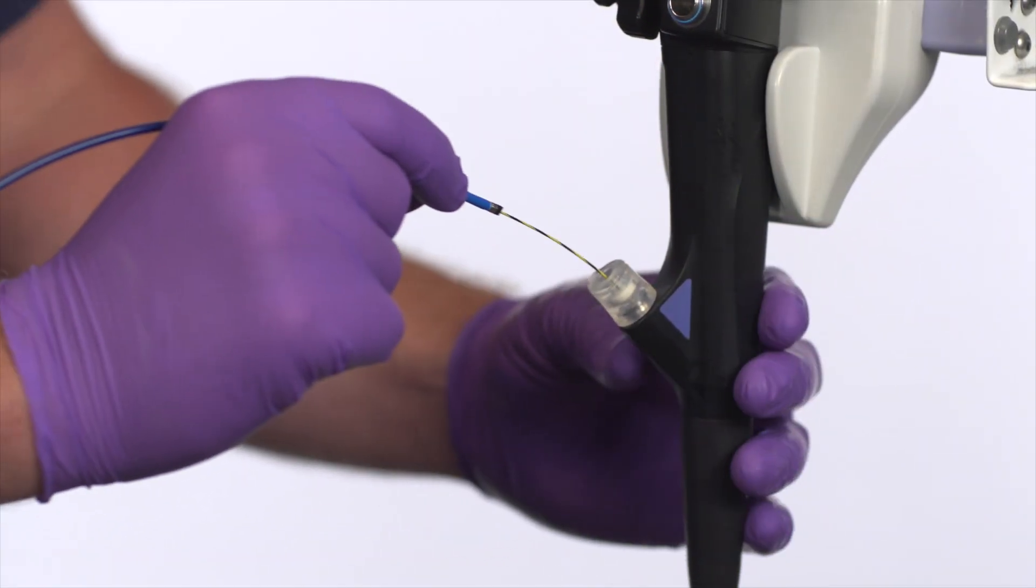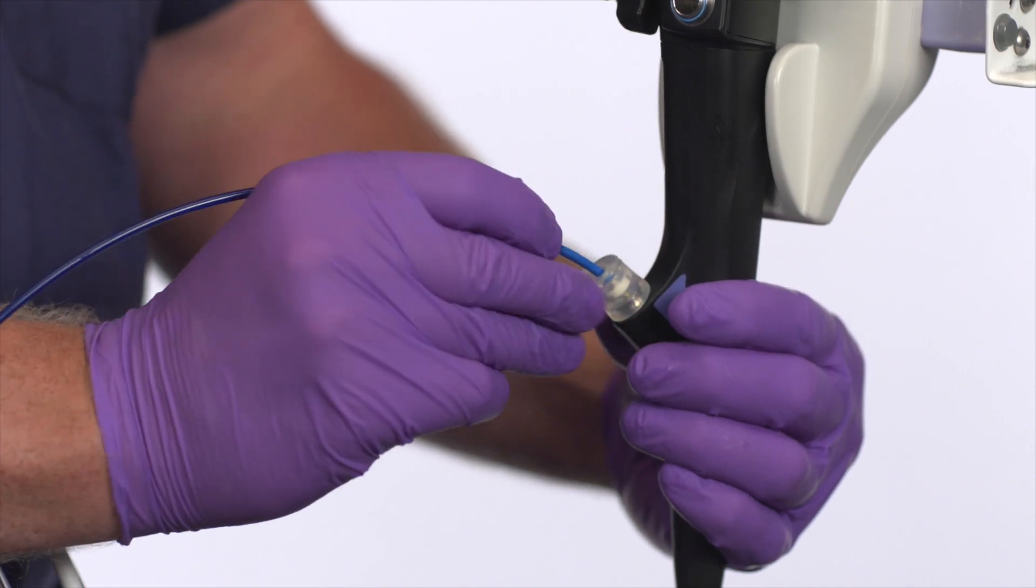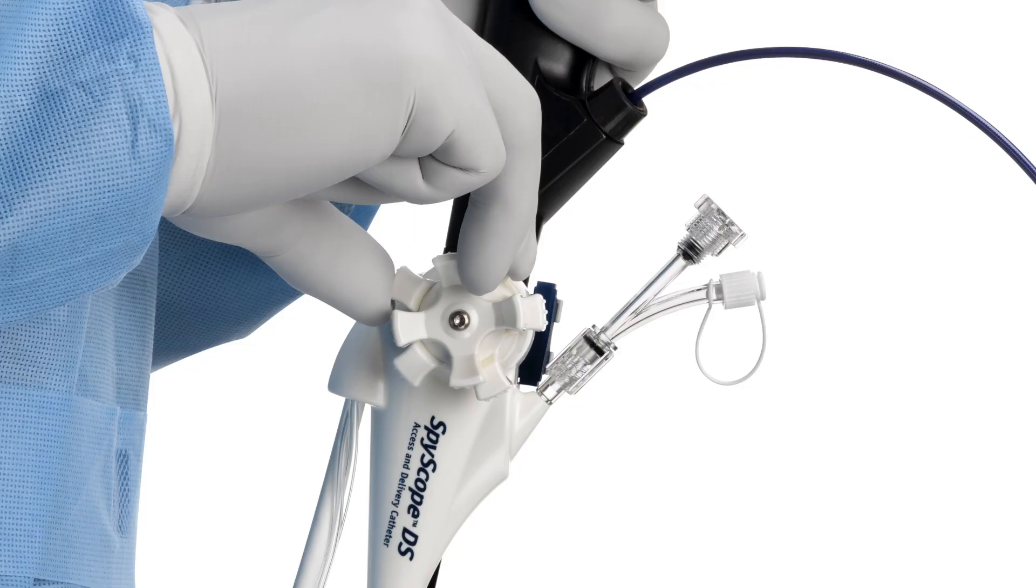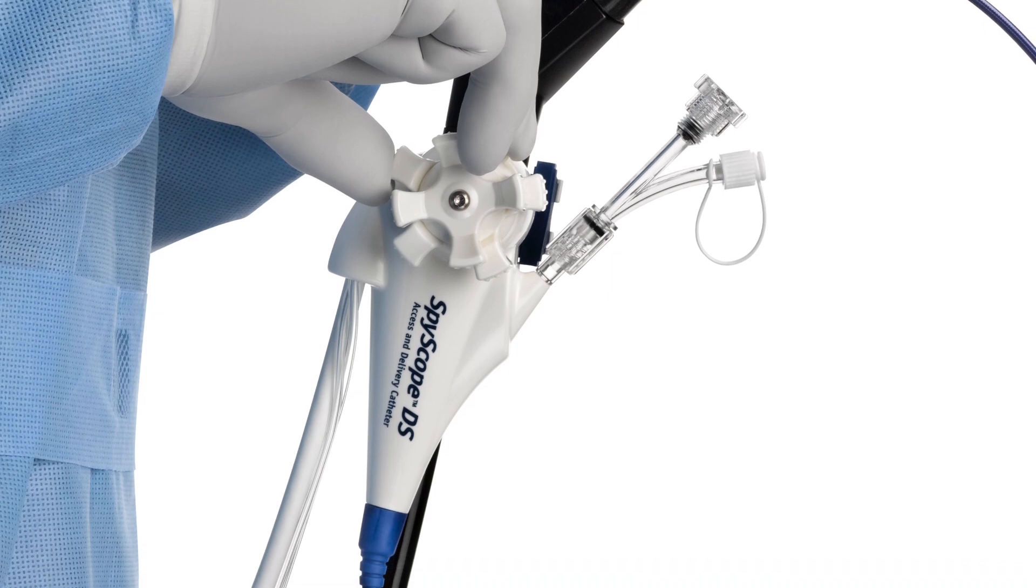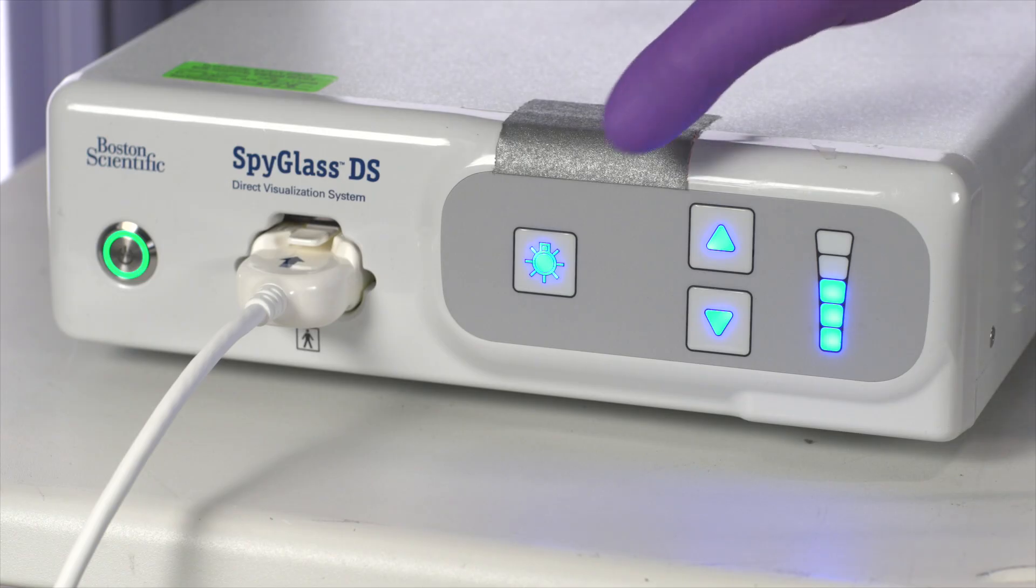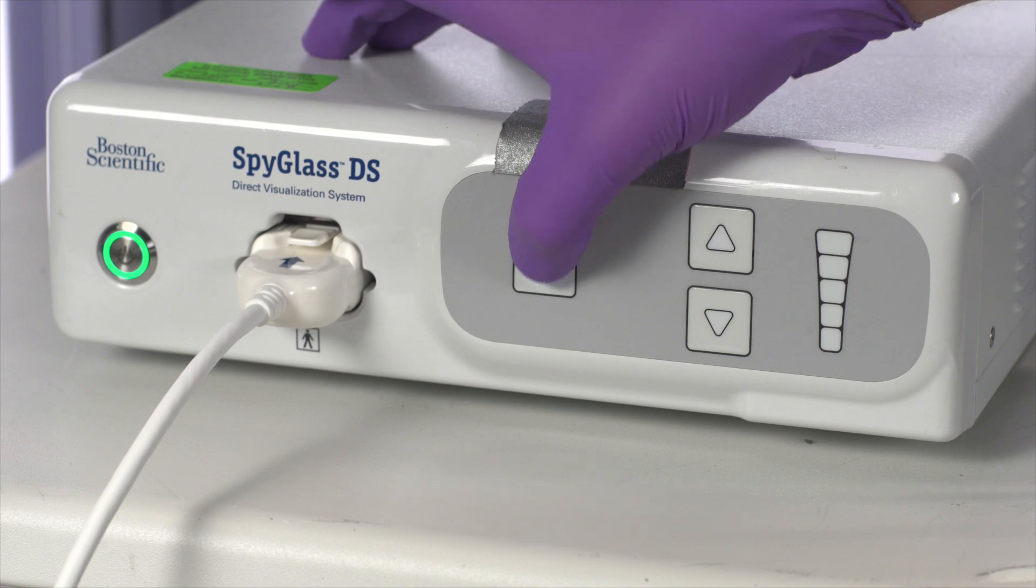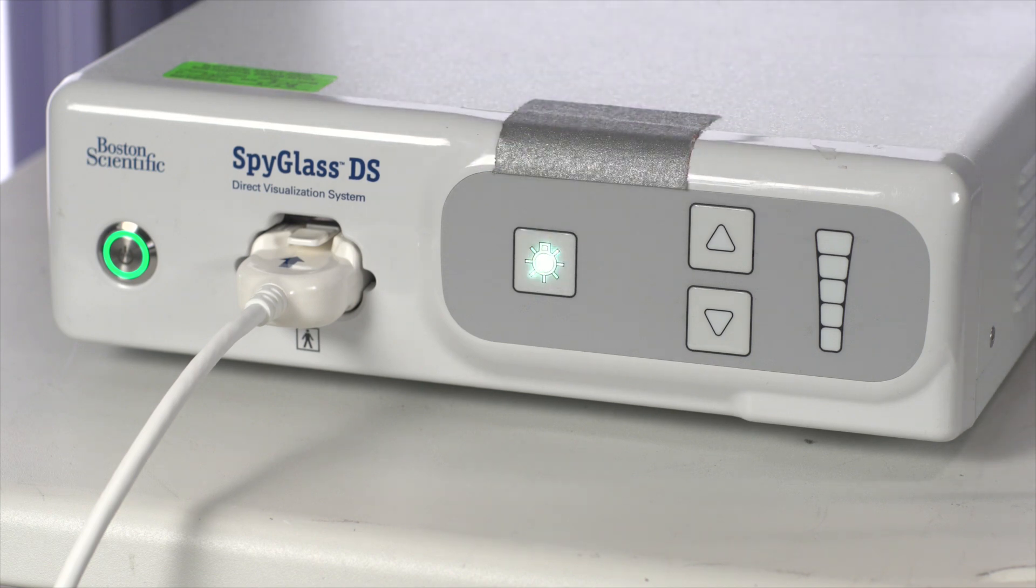Back load the guide wire into the distal tip of the Spyscope DS catheter working channel. If using Y-port adapter, ensure it is in the open position and turn off the light source on controller if necessary, to better see the working channel at the distal end of the Spyscope DS catheter.